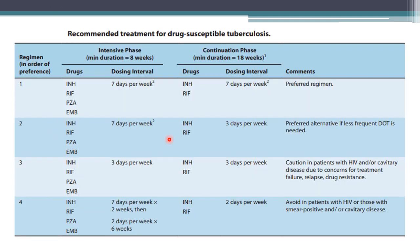The most commonly used regimen is: isoniazid, rifampin, pyrazinamide, and ethambutol given daily for two months — the intensive phase — followed by isoniazid and rifampin given daily for four months — the preferred continuation phase. In DOTS therapy (Directly Observed Treatment Short-course), the continuation phase gives isoniazid and rifampin three times per week because a healthcare worker goes to the patient's house to administer the drugs.